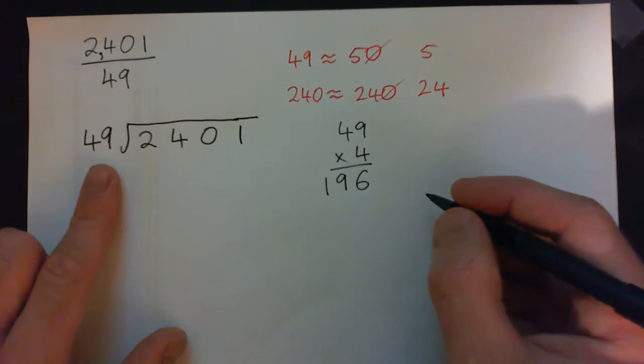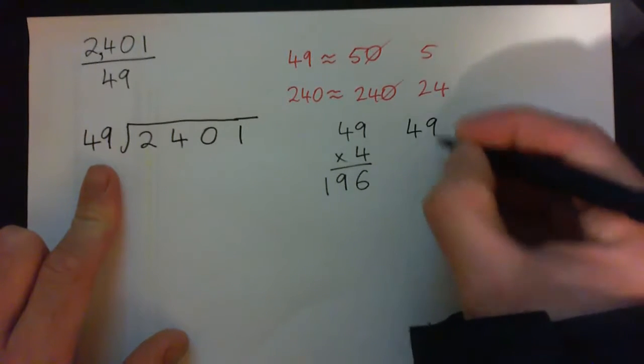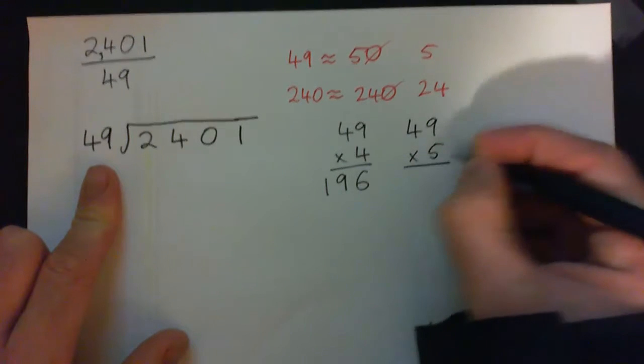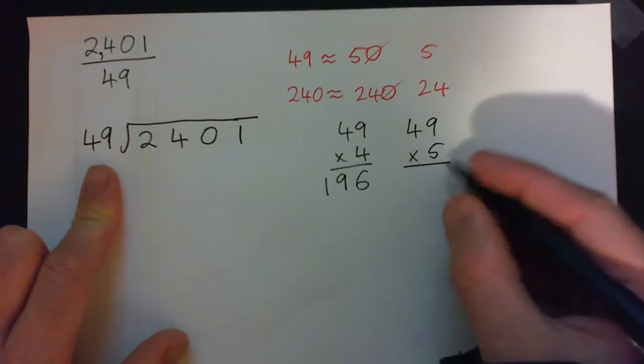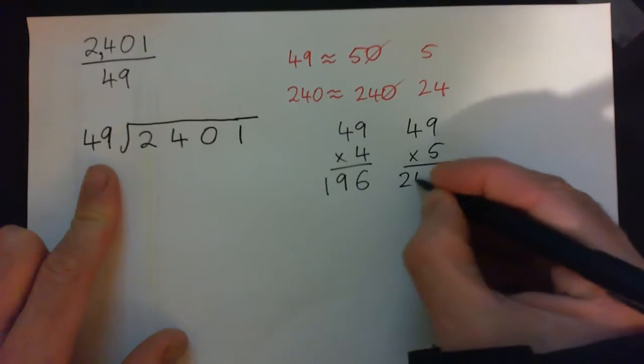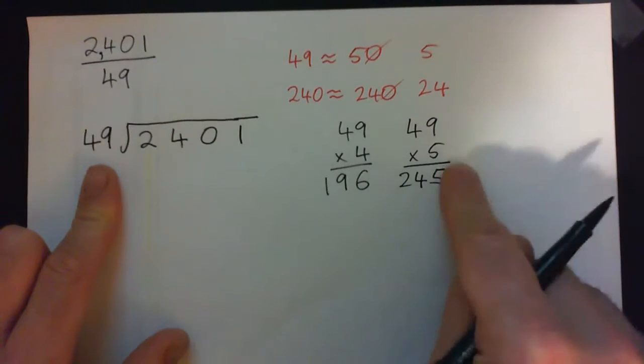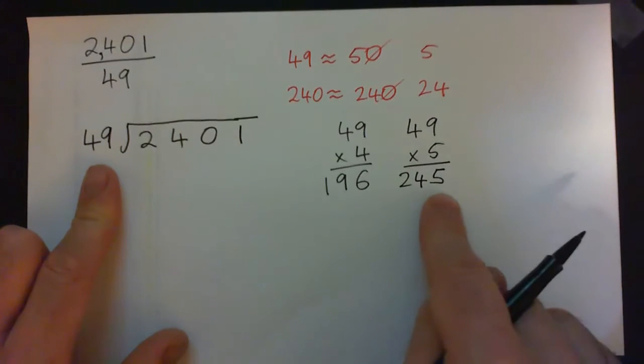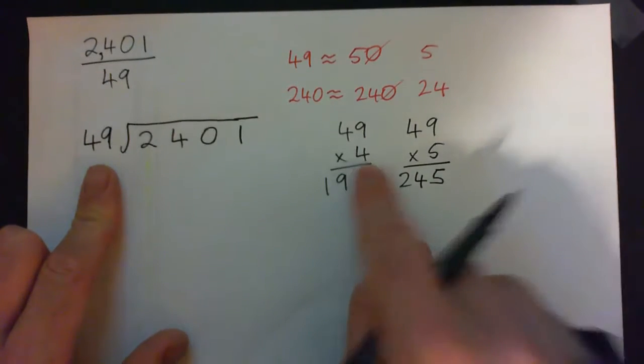Am I too low? 49 times 5, let's see what that is. 5 times 9 is 45, carry the 4. 5 times 4 is 20, plus 4 is 24. So 5 times 49 is 245, that's too high. So we've got to do this one, 4.